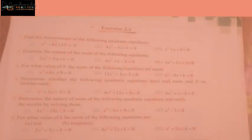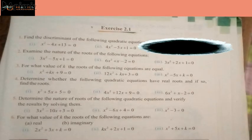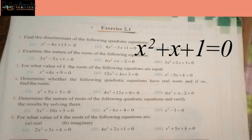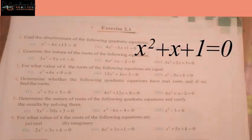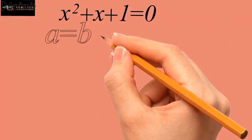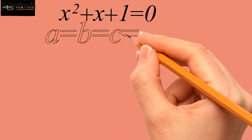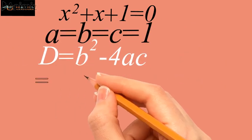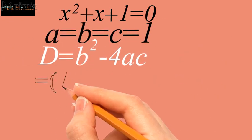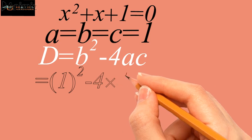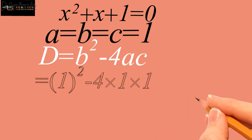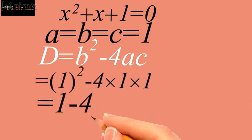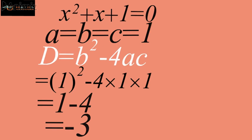The third part is x squared plus x plus 1 equals 0. Here, a, b, and c are all equal to 1. So the discriminant is 1 squared minus 4 times 1 times 1, which gives minus 3. That is the discriminant.